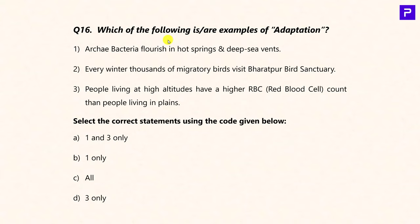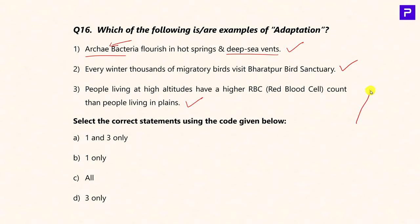Question 13: Which of the following are examples of adaptation? Statement 1: Archaea flourish in hot springs and deep sea vents (hyperthermophiles) — True. Statement 2: Every winter, thousands of migratory birds visit Bharatpur Bird Sanctuary — an example of behavioral adaptive change — True. Statement 3: People living at high altitudes have a higher RBC count than those in plains; as oxygen levels decrease at altitude, the body produces more red blood cells — an example of physiological adaptive change — True. The answer contains all 1, 2, and 3 — option C.